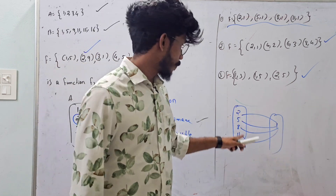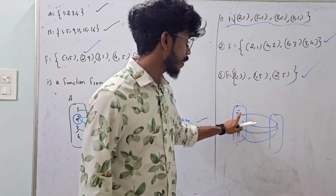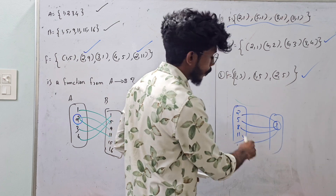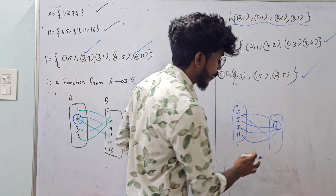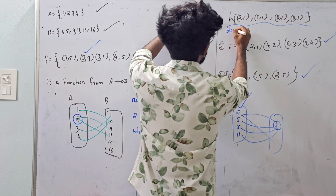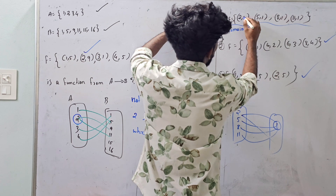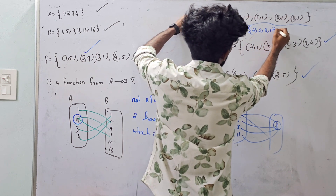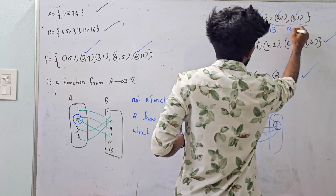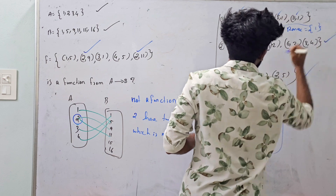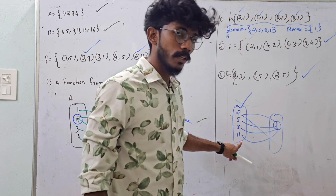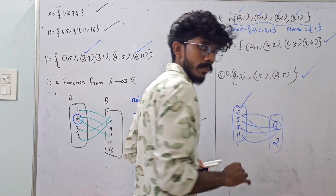You can't do it in one image or the same image — you can't have an element with no image, and you can't have two images for one element. It is possible to say that this is the domain. What is the domain here? The domain is 2, 5, 8, 11. Now the range is 1. So the range is just 1.